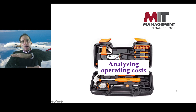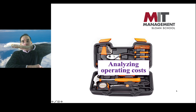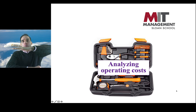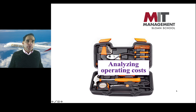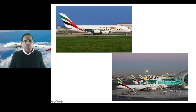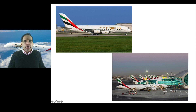Companies can create value either by increasing willingness to pay among a target customer segment for products or services, or by dropping the cost required to provide those products and services. But how do you know if a company has a cost advantage or cost disadvantage? To talk that through, we're going to use the example of Emirates Airlines and walk through some of the financials you could find in their income statement and balance sheet.